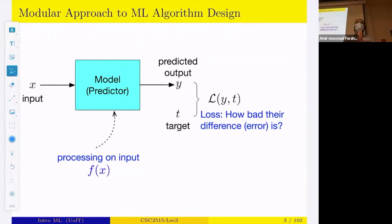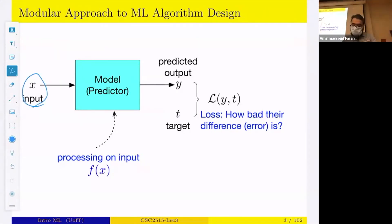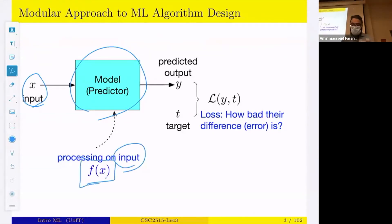Let's go back to what machine learning is, or what a machine learning algorithm is doing. We can think of it as: we have an input, which can have different forms, that goes through some box we call a predictor or model. That box does some processing on the input, summarized by a function f(x), and then we get an output.